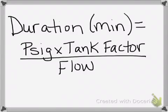This is the equation. The duration that the tank will last in minutes equals the PSIG, which is the pounds per square inch gauge. This is the amount of pressure in the tank and can be found with the pressure gauge. Take that and multiply the tank duration factor we just discussed. Divide by the flow that the patient is receiving in liters per minute.